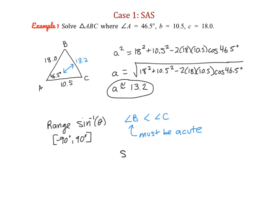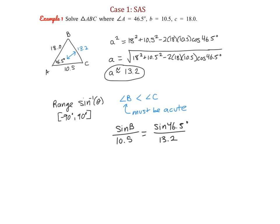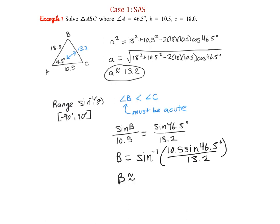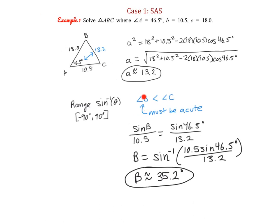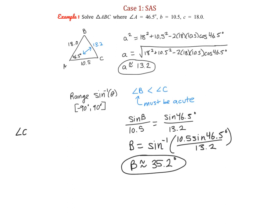Setting up our equation: sine of B over 10.5 equals sine of 46.5 degrees over 13.2. The next step is to show what you're plugging into the calculator: B equals the arc sine of (10.5 times sine of 46.5 degrees, all over 13.2). Plugging this in, you should get approximately 35.2 degrees. Since B is the smaller angle and therefore acute, this is our only answer. We use the triangle sum theorem to find angle C: 180 minus 46.5 minus 35.2.